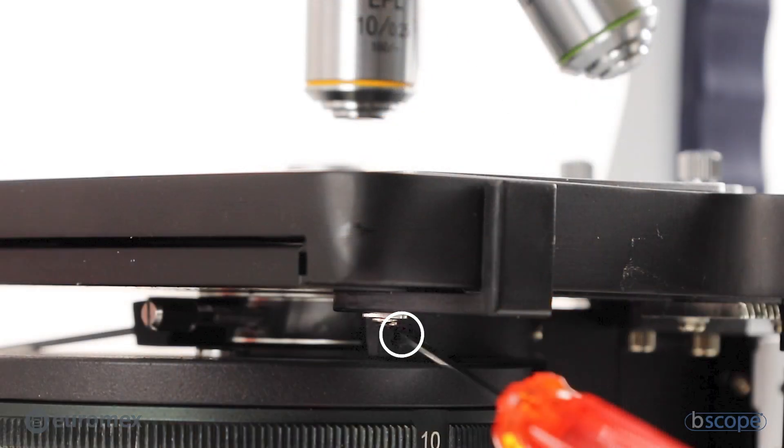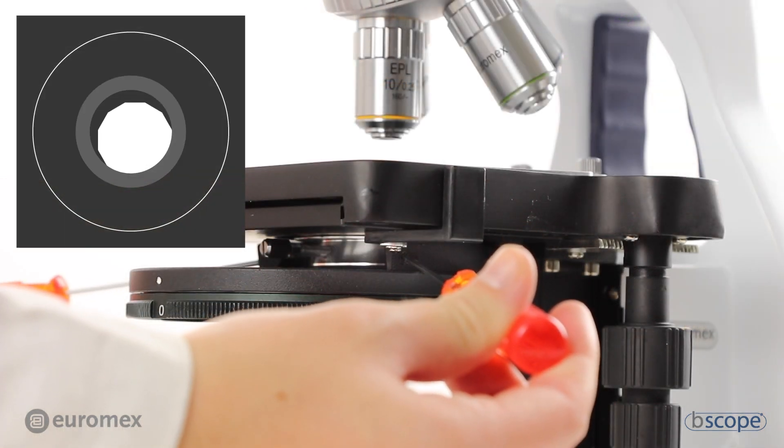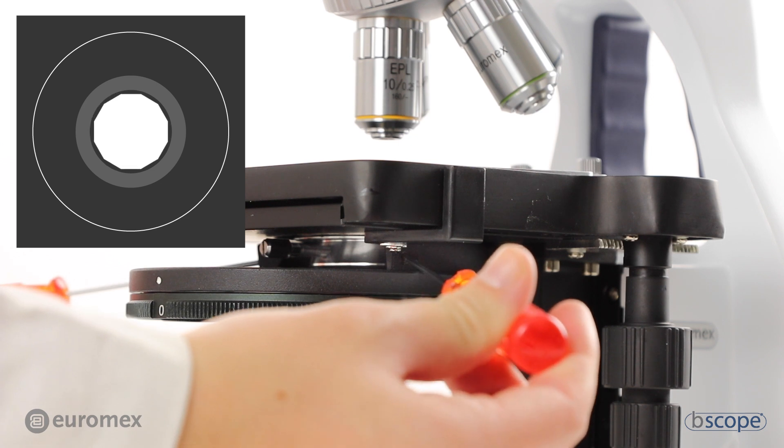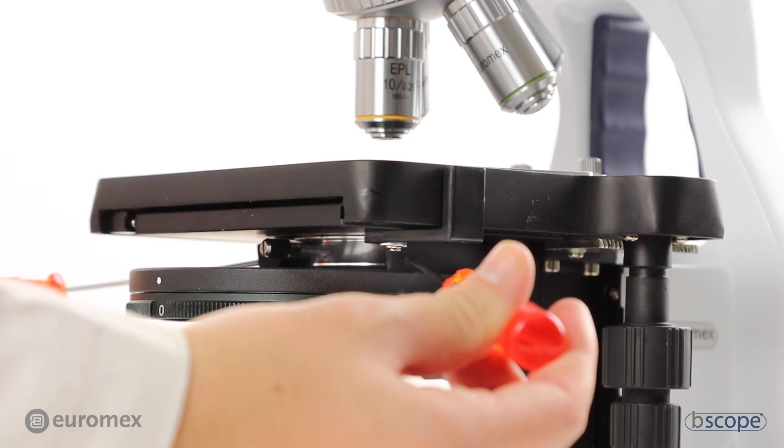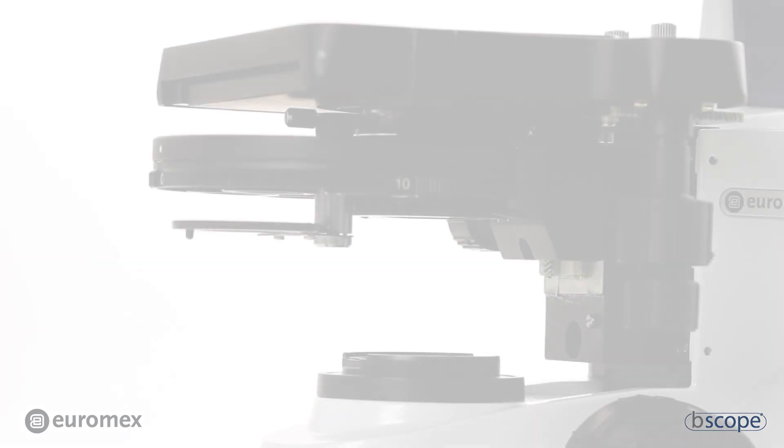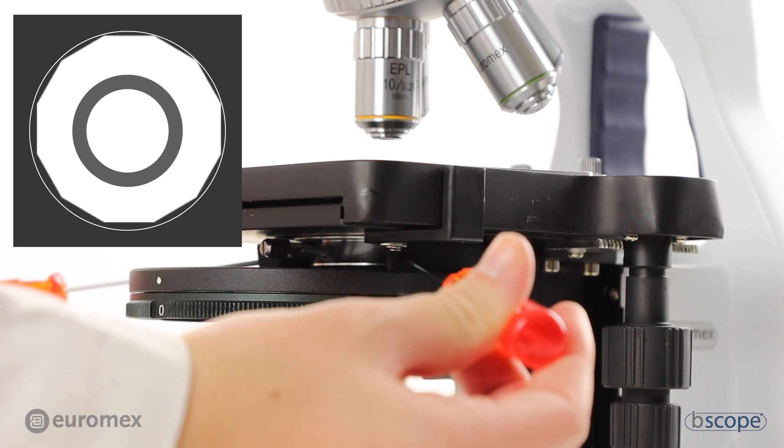Adjust the condenser using two allen wrenches. To check if the condenser iris is properly centered, open the iris to the edge of the view and fine-tune the centering using the allen wrenches.